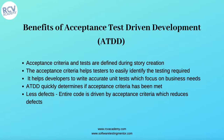The first benefit is that acceptance criteria and test cases are defined during story creation. When you are creating the user story, you already have the acceptance criteria defined and the test cases already defined, and these have been agreed upon by the whole team in the agile development approach.